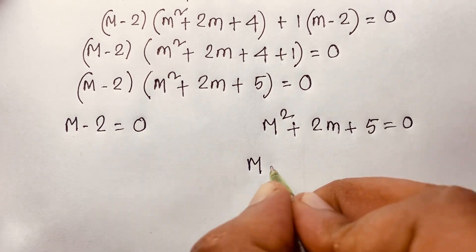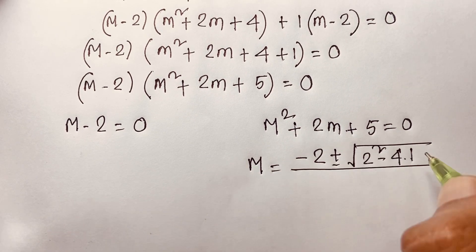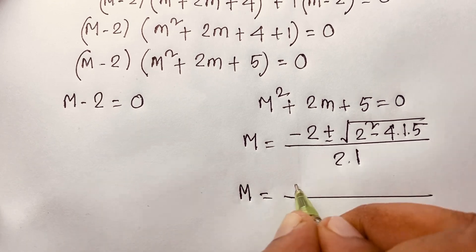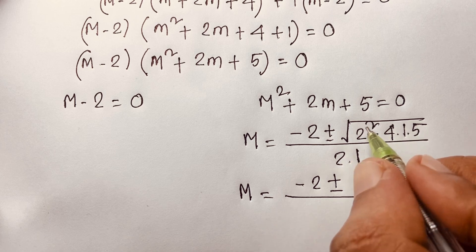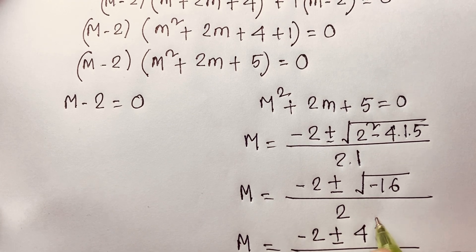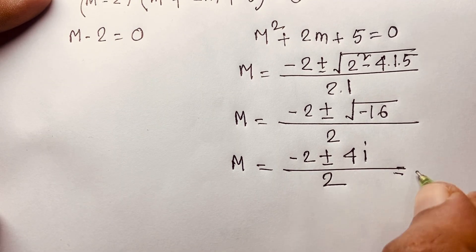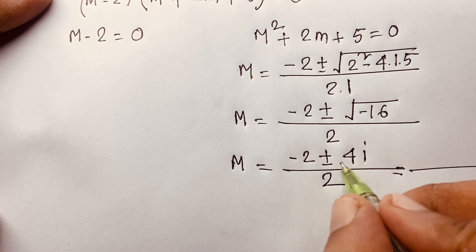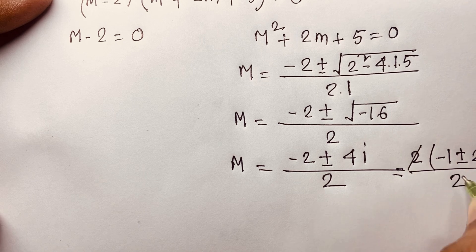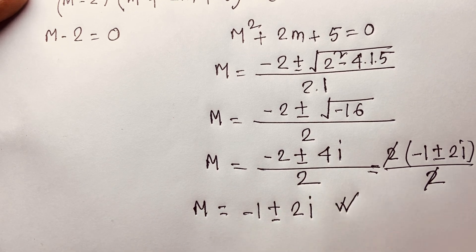For the second case, using the quadratic formula: m equals minus b plus or minus square root of b squared minus 4ac, with a equals 1, b equals 2, c equals 5, over 2a. So m equals minus 2 plus or minus square root of 4 minus 20, which is minus 16, over 2. That gives minus 2 plus or minus 4i over 2, and simplifying by canceling the 2, we get m equals minus 1 plus or minus 2i.